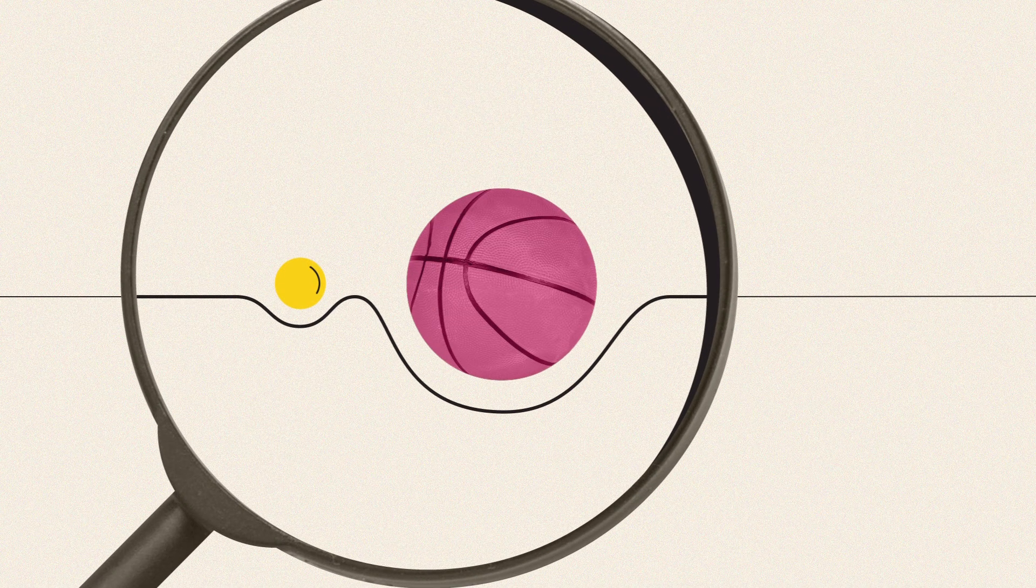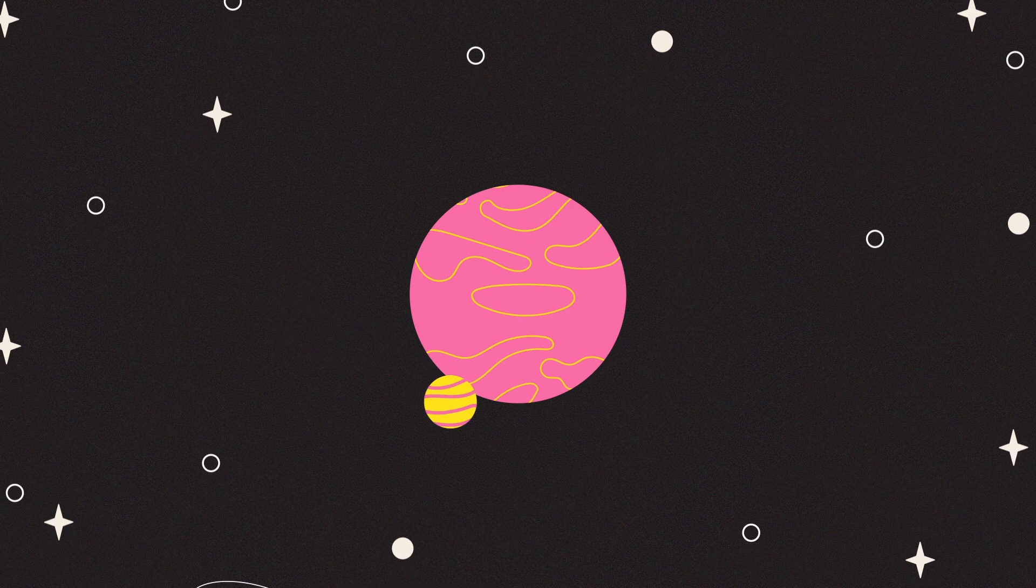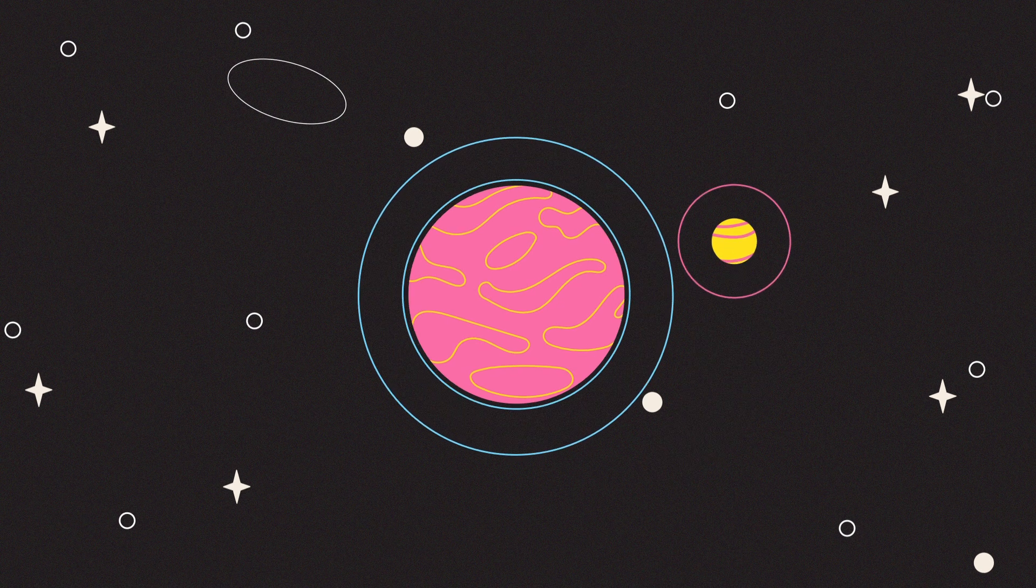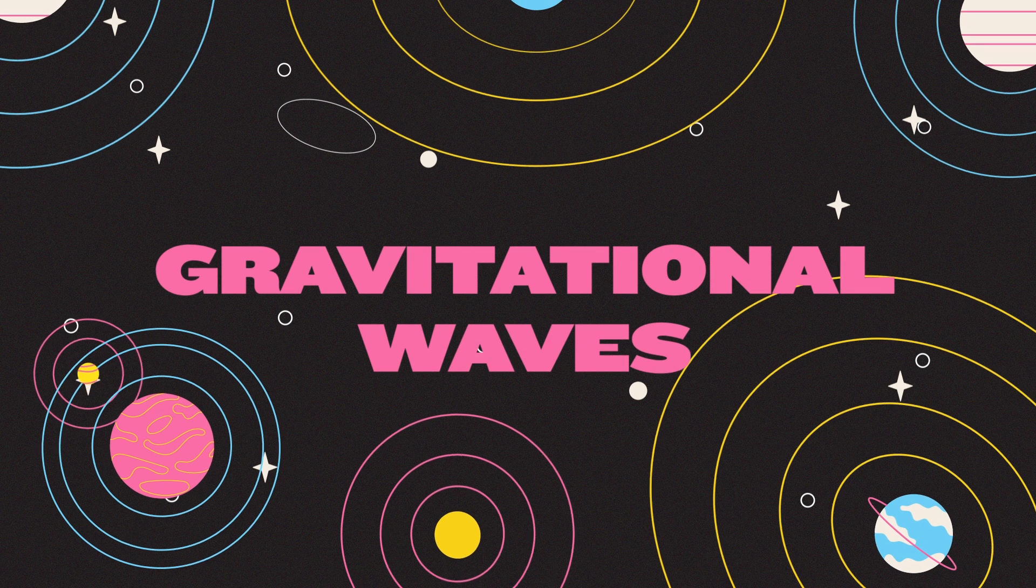The point is, by observing the way objects on the sheet affect the fabric around them, we can visualize how objects in space interact with gravity, and how as they move they create ripples, which will pass through the fabric of space and time. These ripples are gravitational waves.